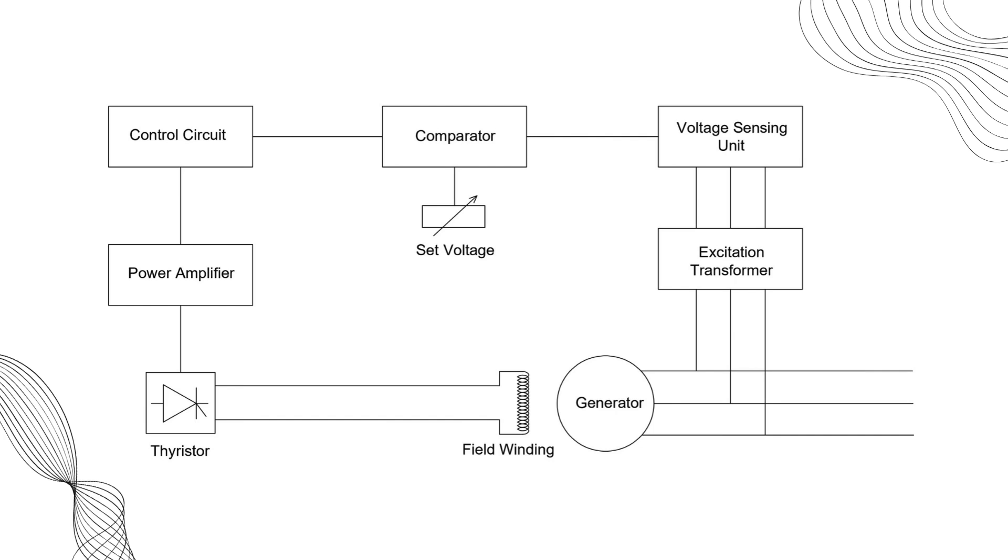The AVR can operate in two modes: auto and manual. In auto mode, the AVR adjusts the output DC voltage to maintain a constant generator output voltage like 15.75 KV. In manual mode, the operator has to constantly monitor the voltage, making it less efficient.